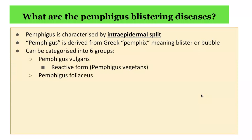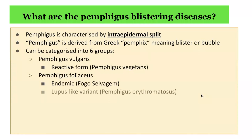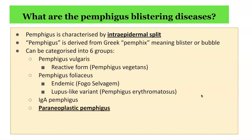The second group is Pemphigus foliaceus, with an endemic variant known as fogo selvagem, as well as a lupus-like variant known as Pemphigus erythematosus. The third group is IgA pemphigus. The fourth group includes paraneoplastic pemphigus, which is the focus of today's presentation. There is also drug-induced pemphigus as well as herpetiform pemphigus. These are the six broad groups under the umbrella of the pemphigus blistering diseases.